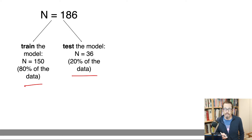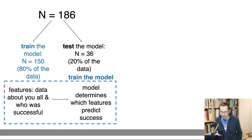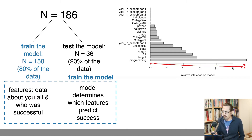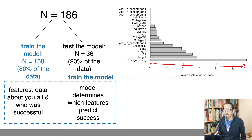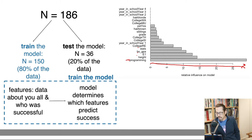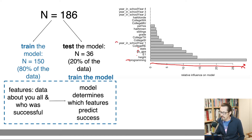We're going to use these features to build a model that predicts success. This bar chart tells you how much influence each variable had on predicting success. Programming skill was very important for deciding whether somebody was successful. Height and grade, your college, whether you like stats or not, and your year in school are all clearly more important on one side and less important on the other.